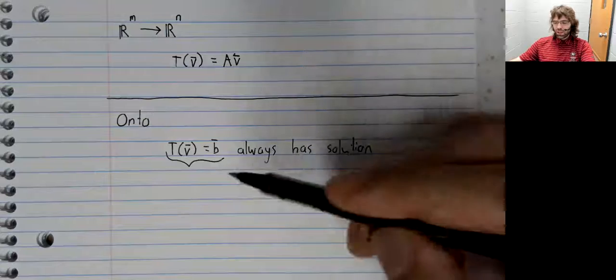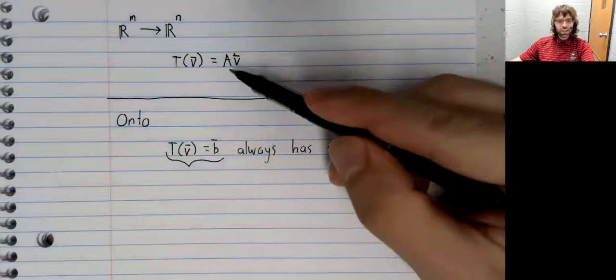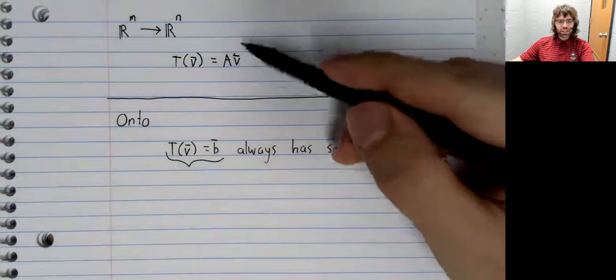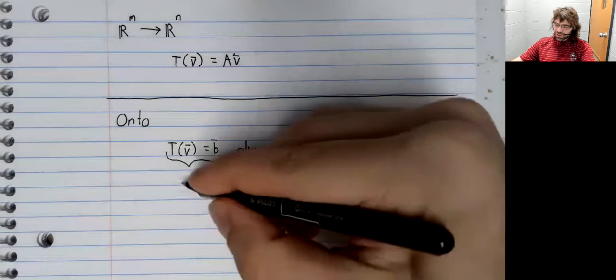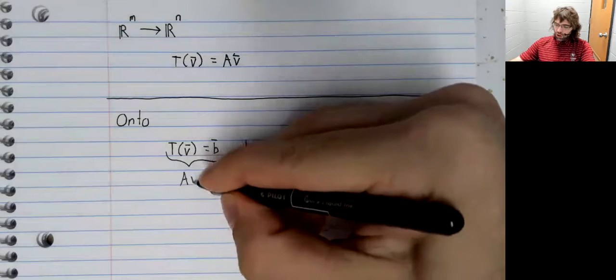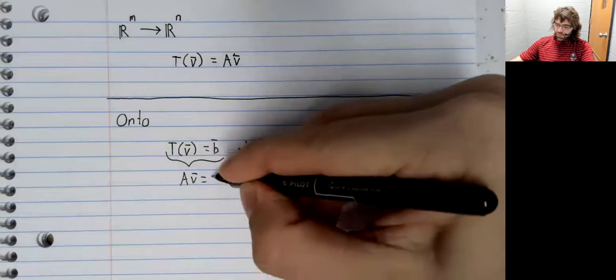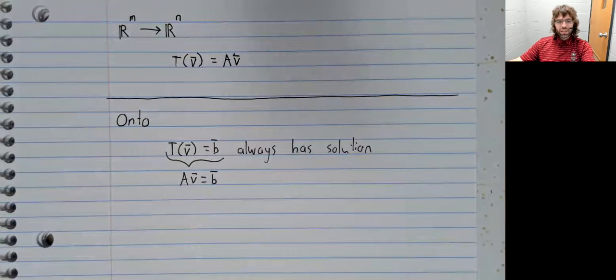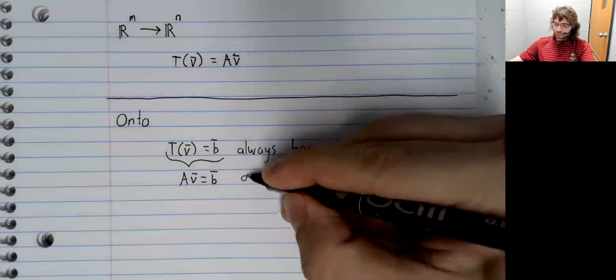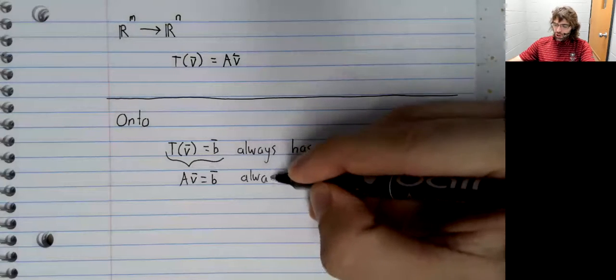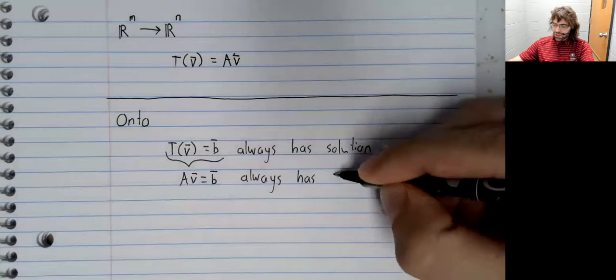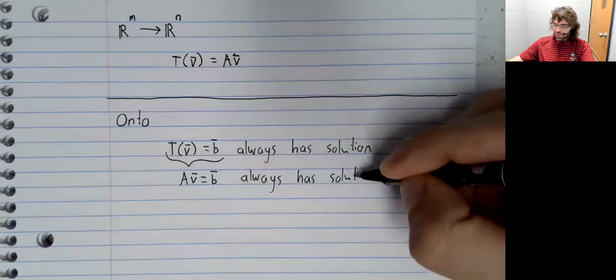And because T of V is a linear transformation, it can be written like this. It's onto if AV equals B, this matrix equation always has a solution.